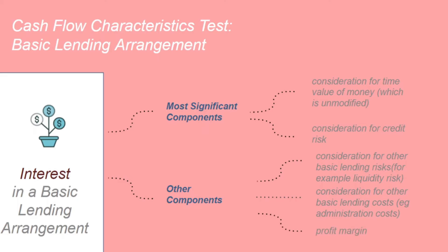So we have five acceptable components within a basic lending arrangement under IFRS 9: consideration for the time value of money (unmodified), consideration for credit risk, consideration for other basic lending risks, consideration for other basic lending costs such as administration costs, and a profit margin consistent with the basic lending arrangement. If interest compensates for anything other than these five components, the cash flows will fail the SPPI test.